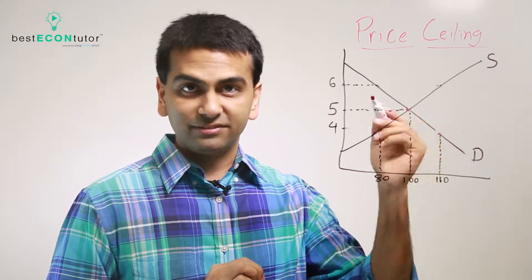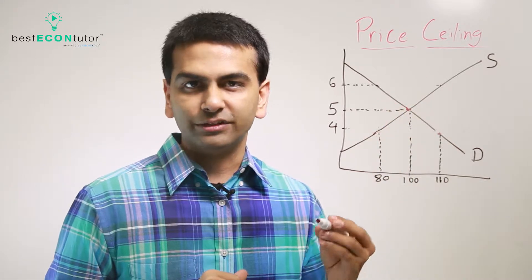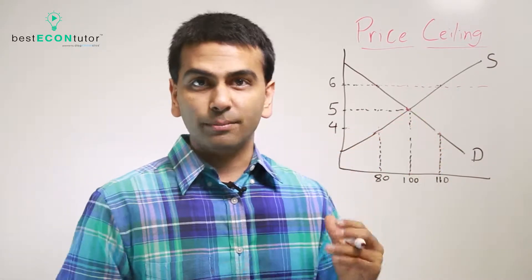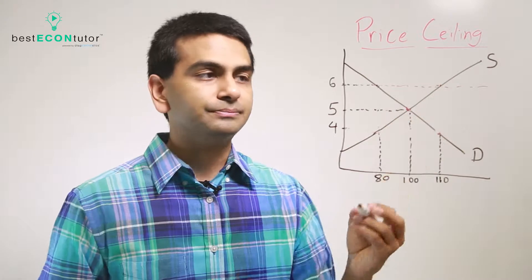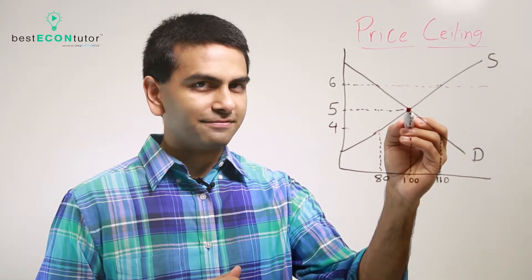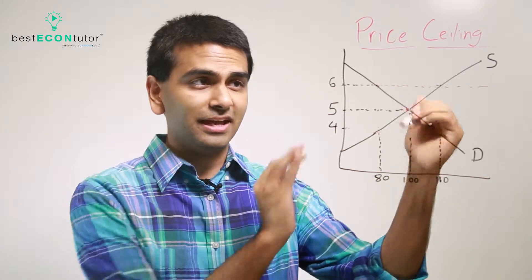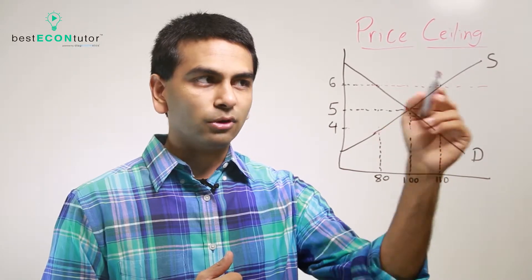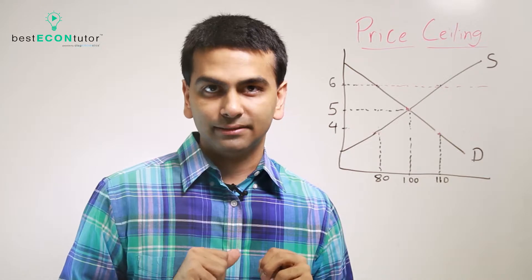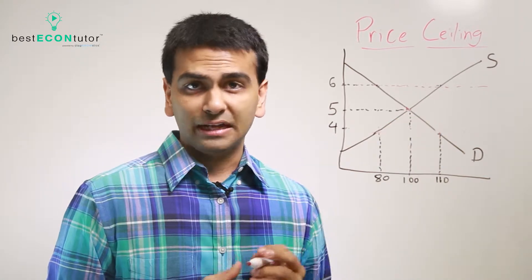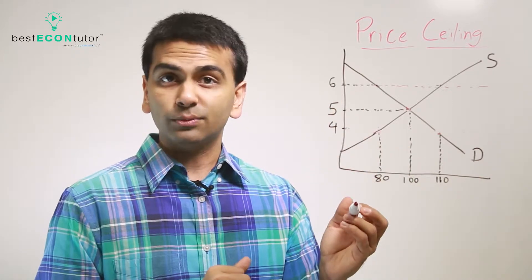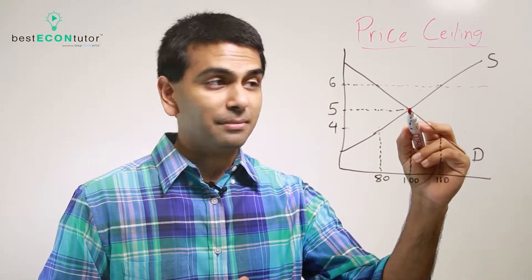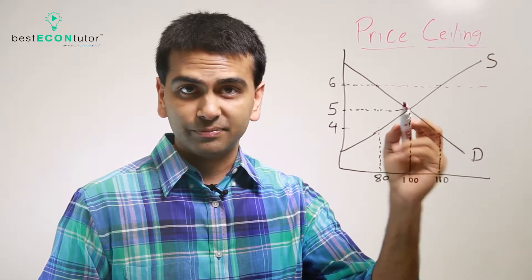What if the government sets a price ceiling of $6? That means $6 is the maximum price you can set. But since our current price is already $5, and $5 is not higher than $6, this is a non-binding price ceiling — it has no effect on the equilibrium at all. The equilibrium stays at quantity 100, price $5.